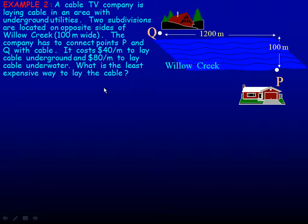On to our second example. We have a cable TV company that's laying cable in the area between two underground utilities. And they're trying to connect two subdivisions across a creek that's 100 meters wide. So they have to connect point Q and point P.